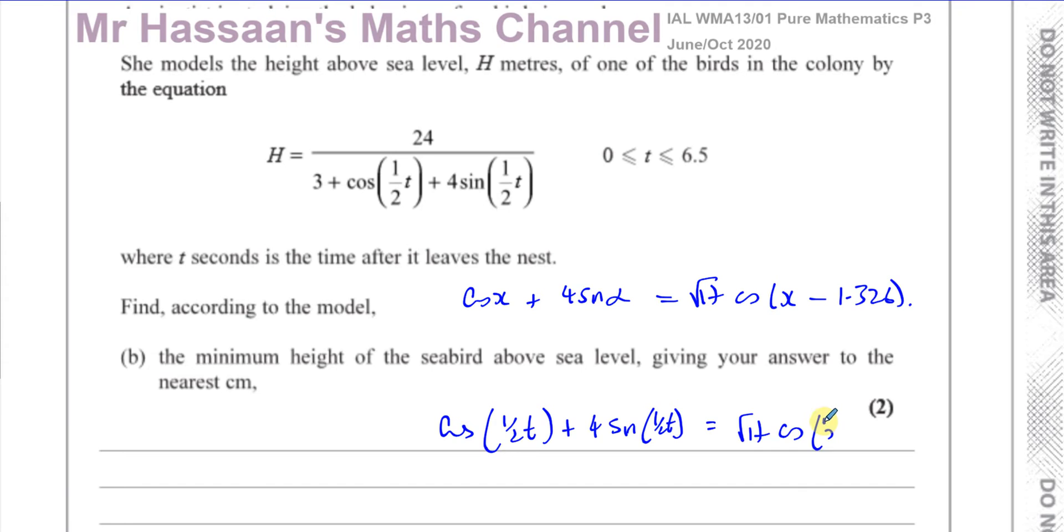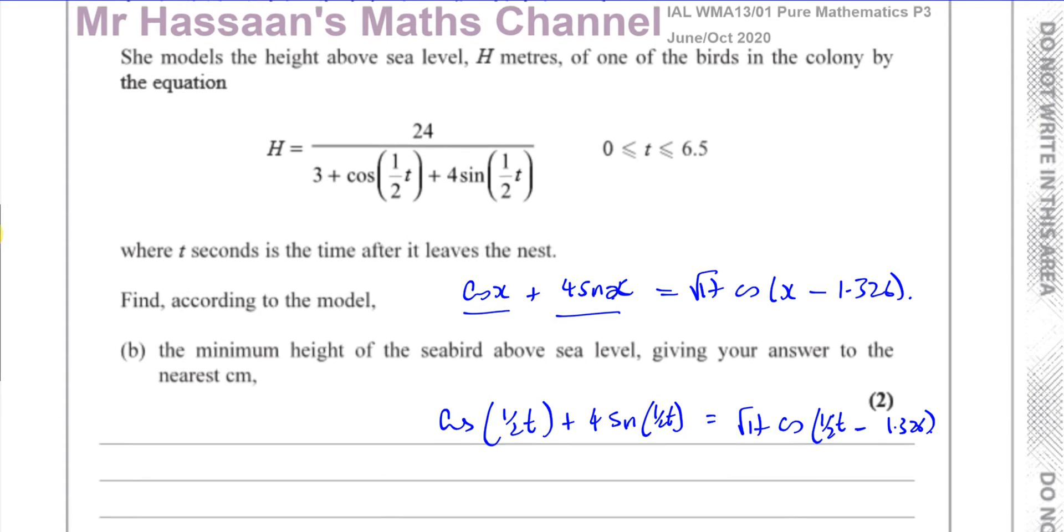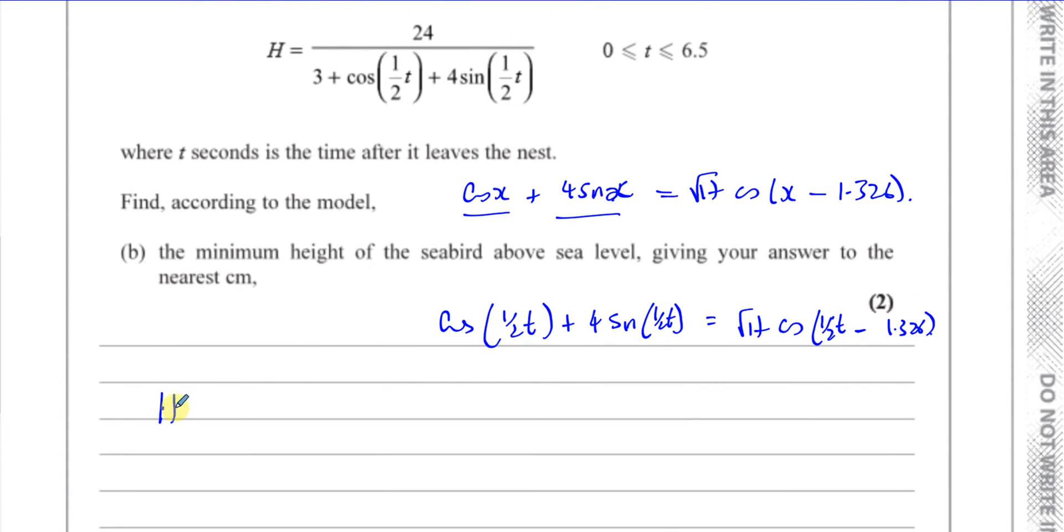So what I can do is I can compare this to what I have over here. I can say that cosine of a half t plus four sine of a half t is the same as root 17 times the cosine of a half t minus 1.326. It's exactly the same thing, except instead of x you have a half t, that's all.